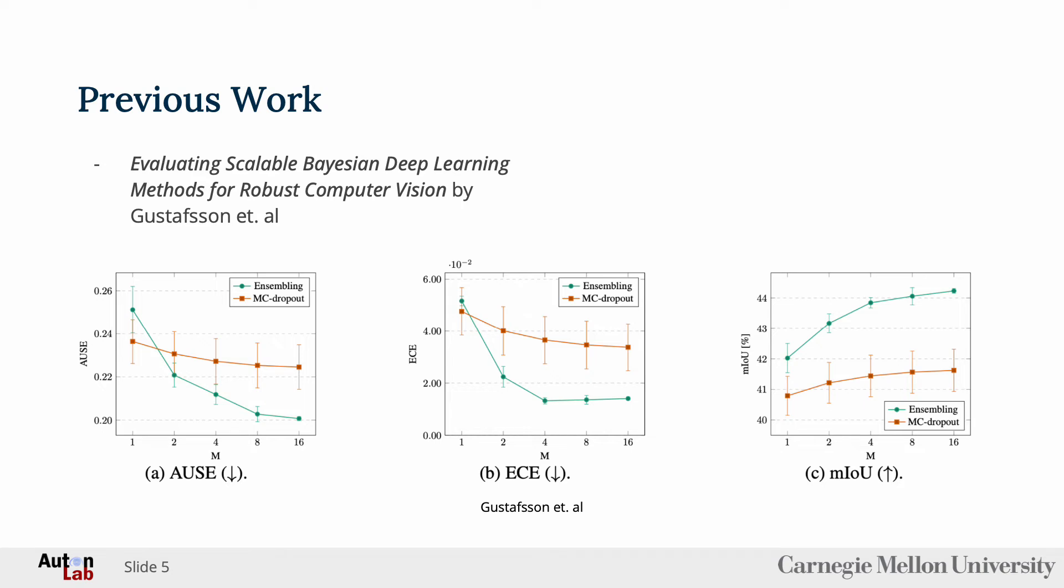We have based our work on Evaluating Scalable Bayesian Deep Learning Methods for Robust Computer Vision by Gustafson. This paper focuses on uncertainty quantification for image segmentation using the Cityscapes dataset. Our goal has been to convert their PyTorch implementation of MC dropout, ensembling, and the DeepLab V3 model into Google Research's UQ framework. We also have aimed to reproduce the results presented by Gustafson.